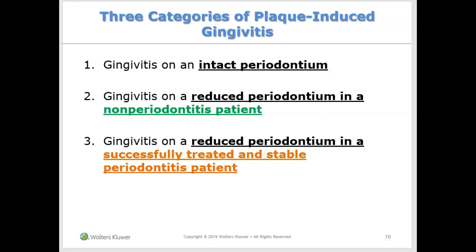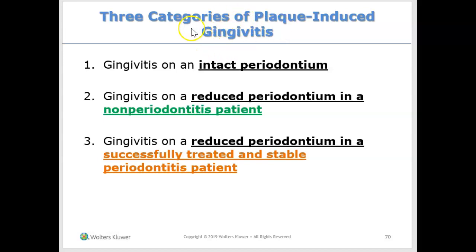In the previous videos we saw three different categories of someone who has a healthy mouth. Now let's look at three different categories of someone who has gingivitis. Remember, gingivitis is inflammation of the gums, and the reason why the gums are inflamed is possibly because of plaque. That's what we call plaque-induced gingivitis. This person has plaque all around their mouth and they're not doing a good job cleaning, so they would have inflamed gums or gingivitis.